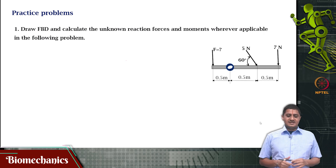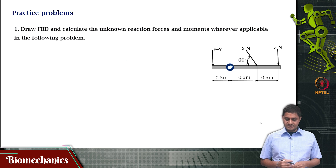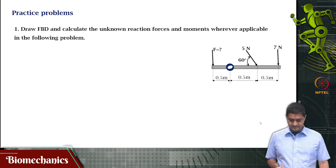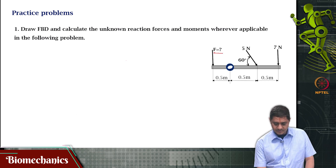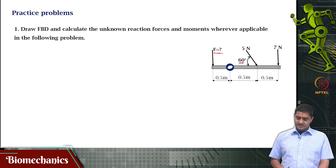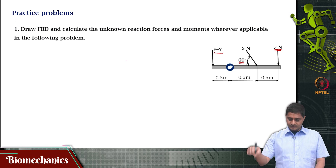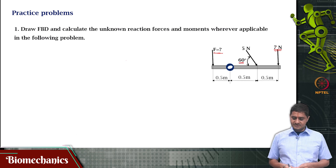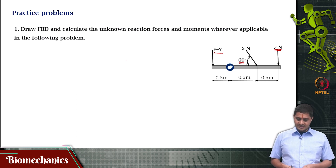Here is a problem in statics. The question is: draw the free body diagram and calculate the unknown reaction forces and moments wherever applicable in the following situation. There is a force applied here which is unknown, and there is a known 5 Newton force applied at an inclination of 60 degrees to the horizontal. There is also a 7 Newton force applied perpendicular to the bar, and these are all separated by 0.5 meters. How many unknowns will there be in this case?